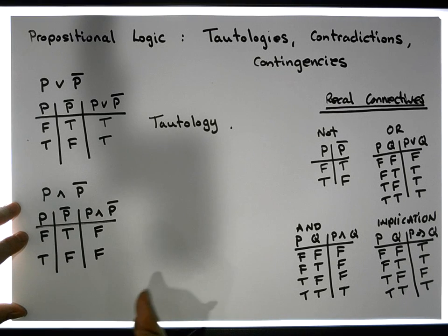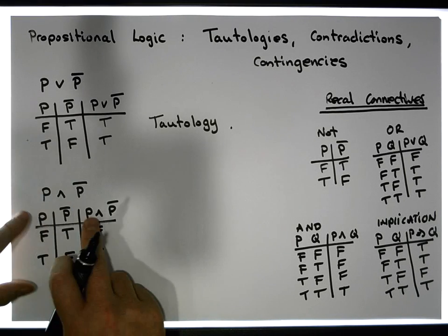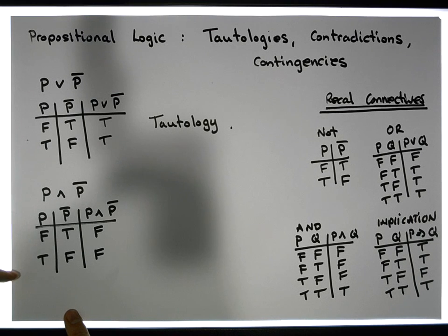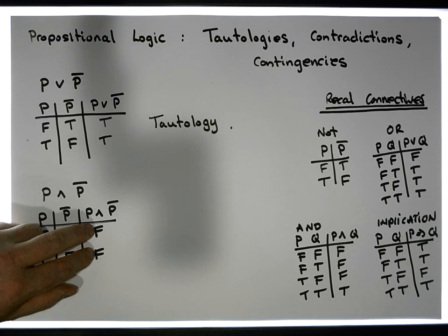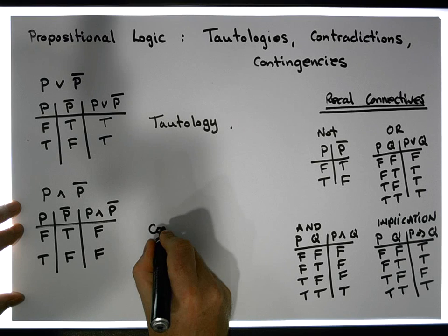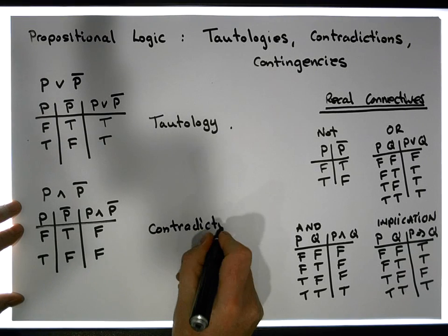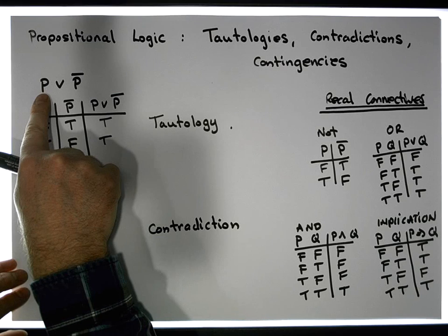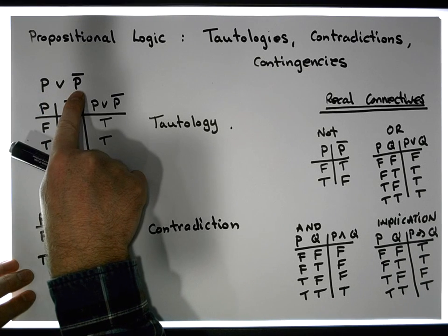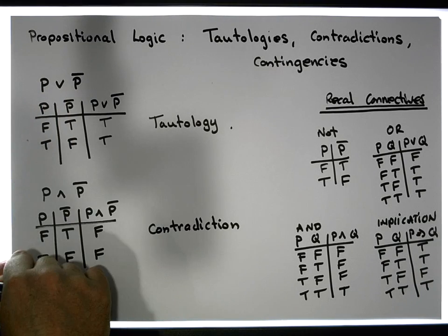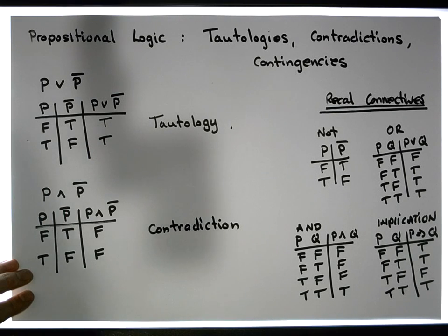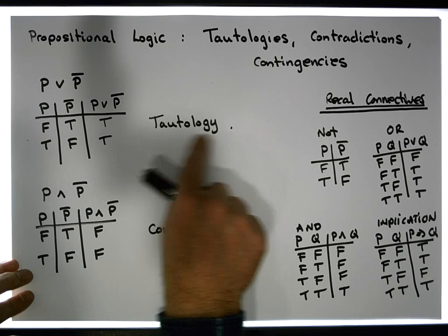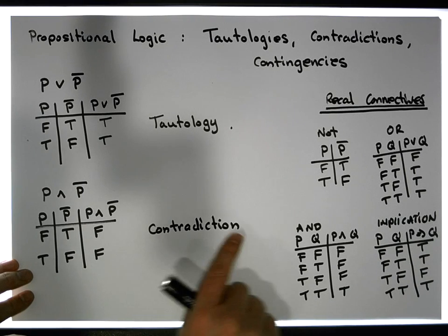In this example, no matter what the inputs are to the propositional expression, the output is always false. We call this type of proposition a contradiction. If you think about it in the real world: if you say to your mother 'I'm going to the shops OR I'm not going to the shops,' you can never tell a lie, so it's always true — that's a tautology. If you say 'I'm going to the shops AND I'm not going to the shops,' well, you can't do that, so it's always false — that's a contradiction.